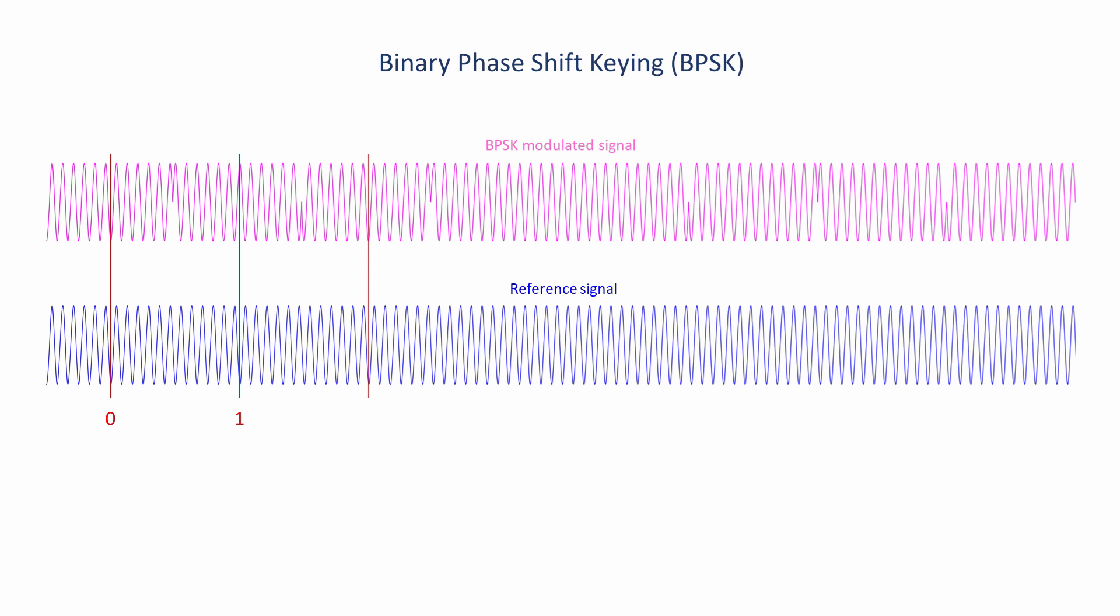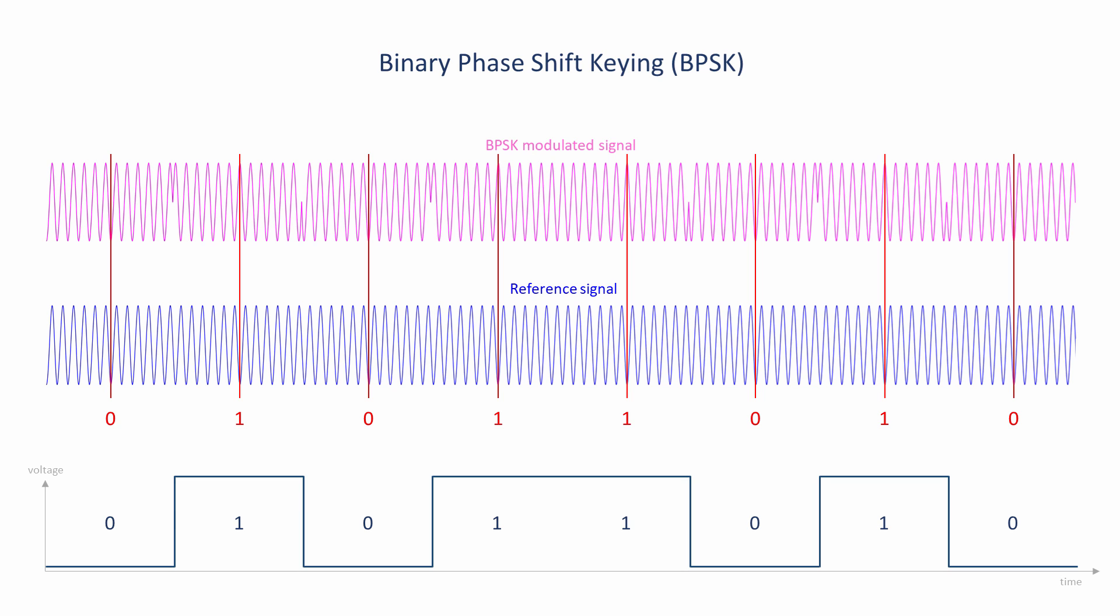The incoming signal is sampled at the symbol rate, and if the received signal is in phase with the reference signal, it's decoded as a binary 0. If it's 180 degrees out of phase, it's decoded as a binary 1. Needless to say, timing and synchronization are an important aspect of what's going on inside the receiver.